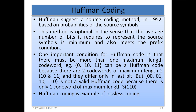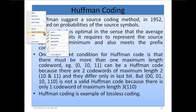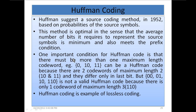One important condition for a Huffman code is that there must be more than one maximum-length codeword. For example, {0, 1, 0, 1, 1} can be a Huffman code because there are two codewords of maximum length 2 — '10' and '11' — and they differ only in the last bit. But {0, 0, 0, 1, 1, 0} and '110' is not a valid Huffman code because there is only one codeword of maximum length 3.